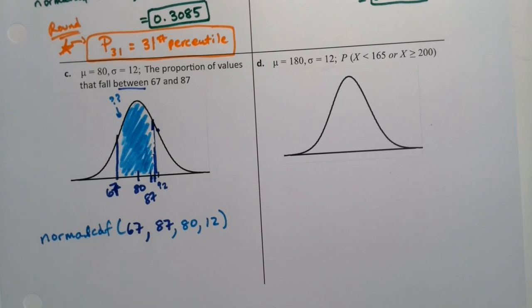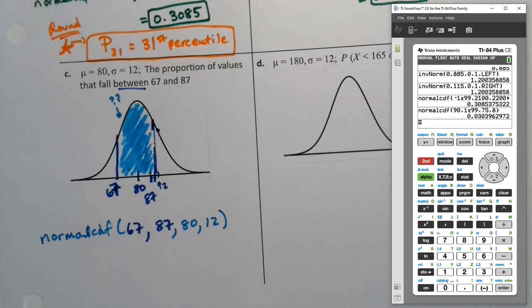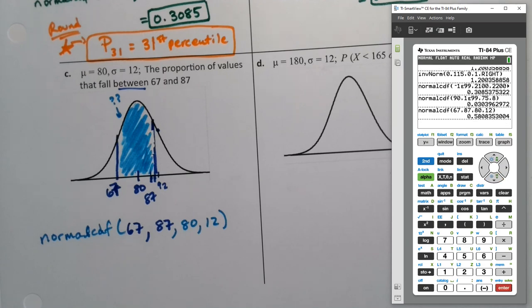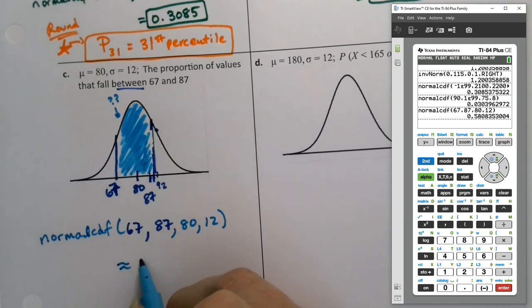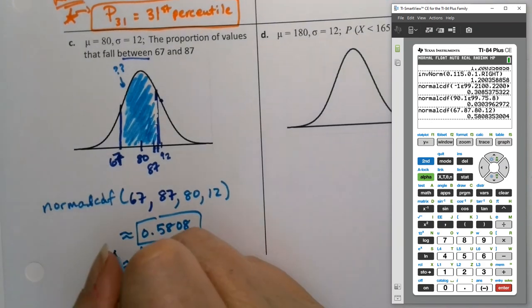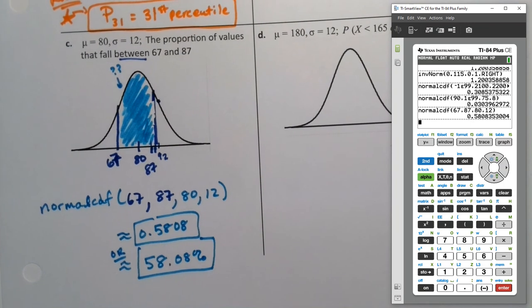So let me grab the calculator. Now that I have the right numbers in there. Making mistakes all over the place on this one. So normal CDF 67. Arrow down. 87. And then this one's 80 and 12. And paste. And press enter. And we get 0.5808. Which is fine. Proportions are often written as a percent. So you could write it 58.08% also.